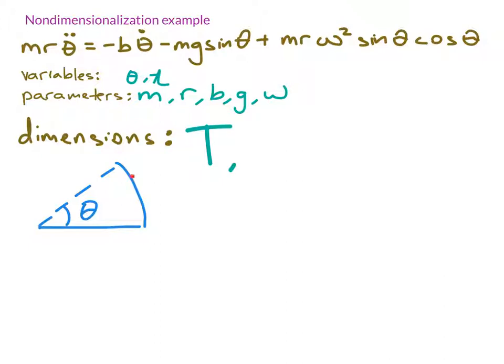What about the dimension of theta? Well, actually, you might not think of it this way, but theta is a ratio of two lengths, the length of this arc to the length of this radius. And so because it's a ratio of two lengths, theta is actually dimensionless.